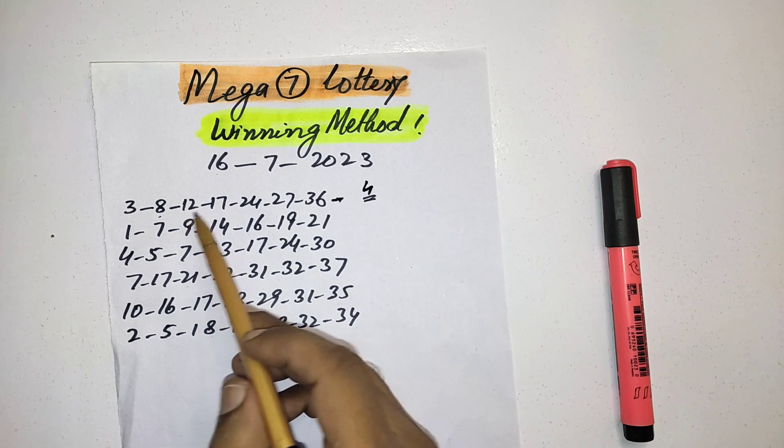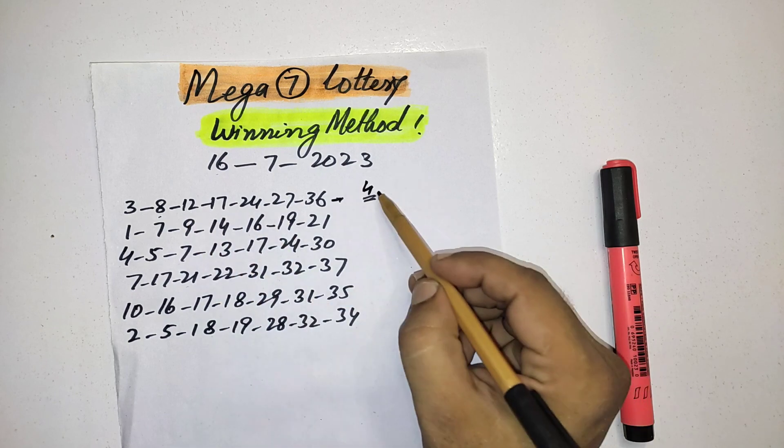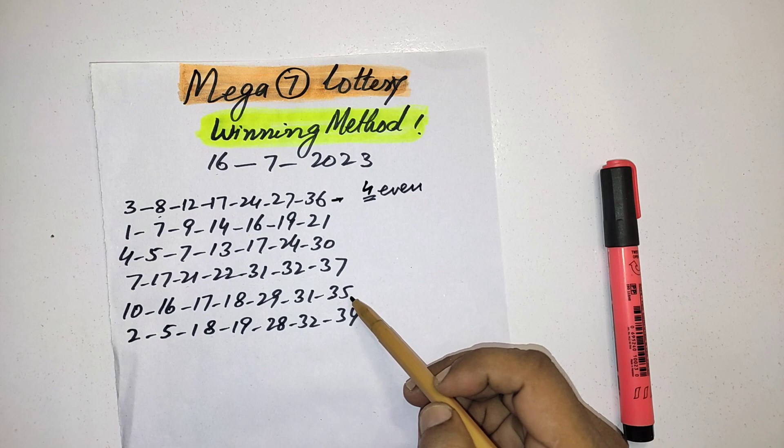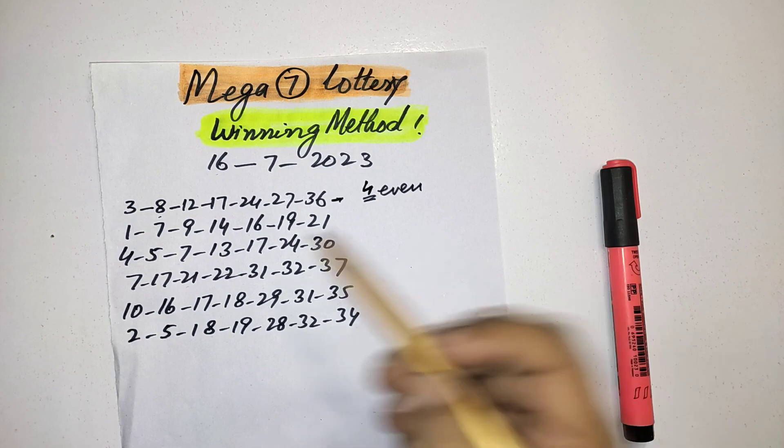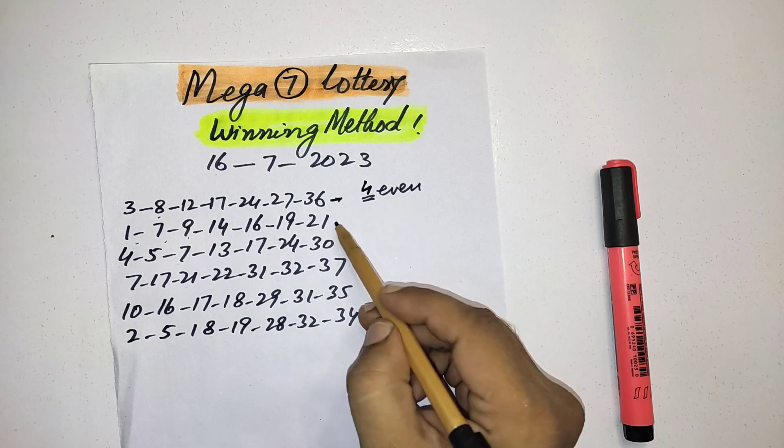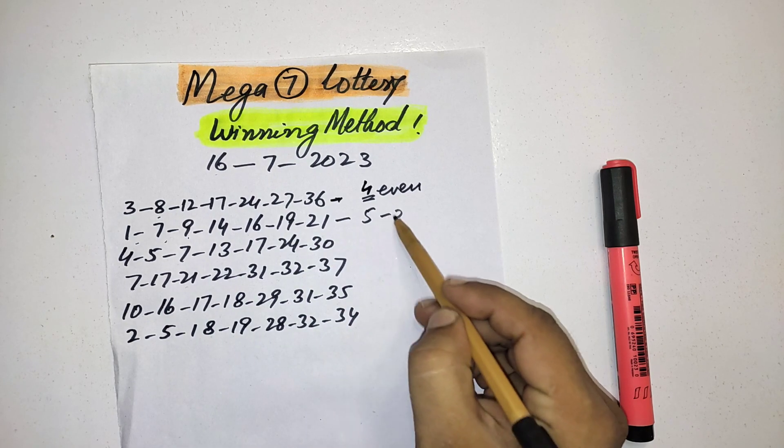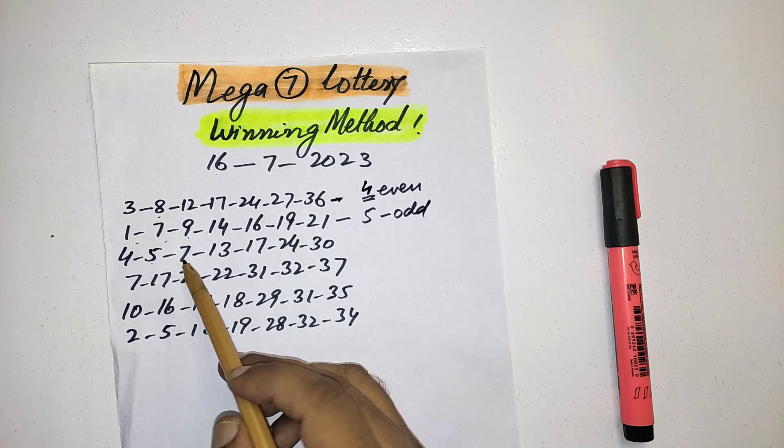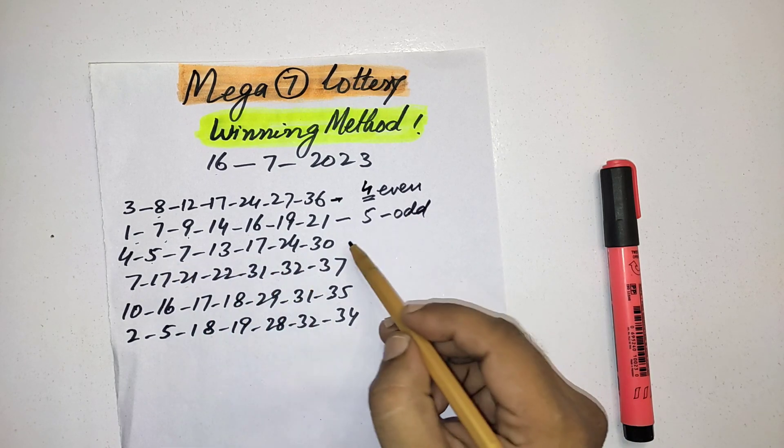They picked four numbers in this result, even. After that, in four draws they picked more numbers in odd. You can see one, two, three, four, five - five numbers odd. Same in the next, one, two, three, four - again four numbers in odd.